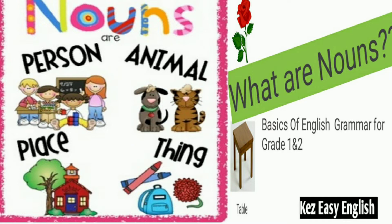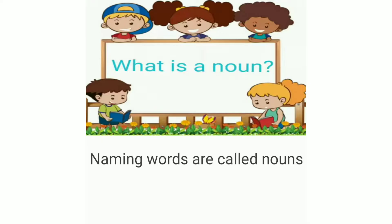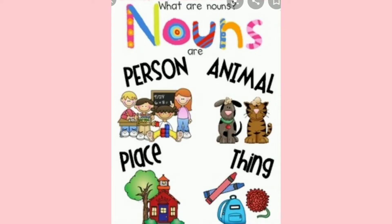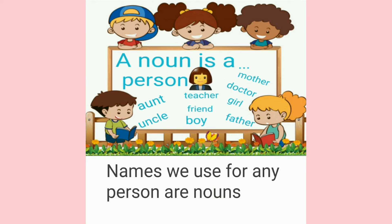Are you ready? Here we go. What is a noun? Naming words are called nouns. Noun means names of people, animals, birds, places, things, etc. Any name that you give to a particular place or thing or idea is a noun. So the first thing is: nouns are names we use for any persons.